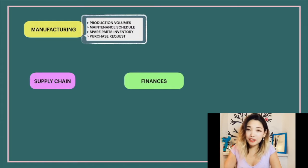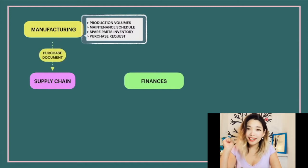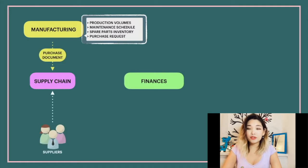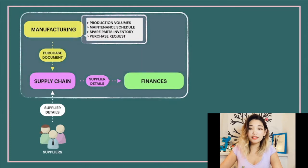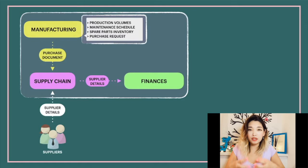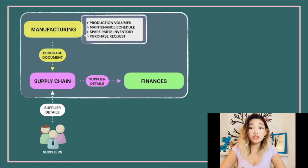Now let's say the manufacturing department needs to purchase something and sends a purchase request to the supply chain department. The supply chain department in turn finds an appropriate supplier that provides its supply details to the supply chain department, which in turn provides these details to the finance department. Here I highlighted an example of data in motion — active data sent over the protected private organizational network, like between manufacturing and supply chain, and supply chain and finance.